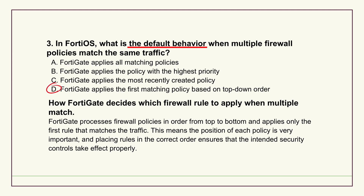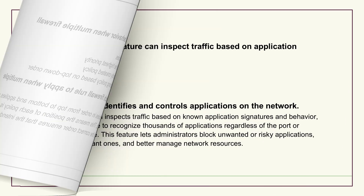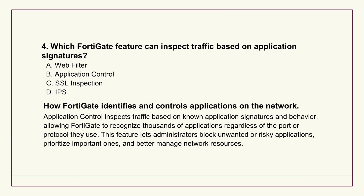Policy order is not just a suggestion - it's how it works by default. Moving on, from who can talk to what they're talking about: question four deals with identifying traffic by application, not just by port number. It asks which FortiGate feature uses application signatures to inspect traffic. The options included web filter, application control, SSL inspection, and IPS. And the source says application control is the one using signatures for this.